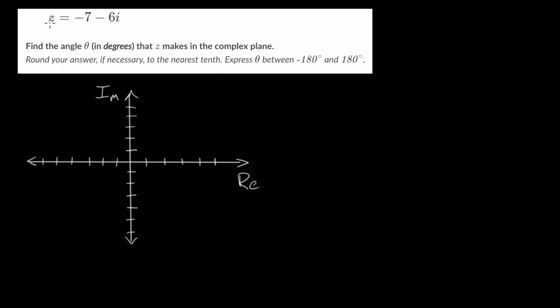We have this complex number z, which is equal to minus 7 minus 6i, and we need to find the angle theta, now in degrees, that z makes in the complex plane.